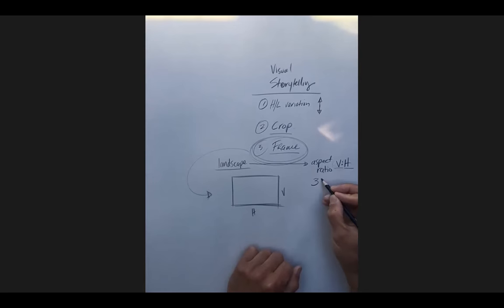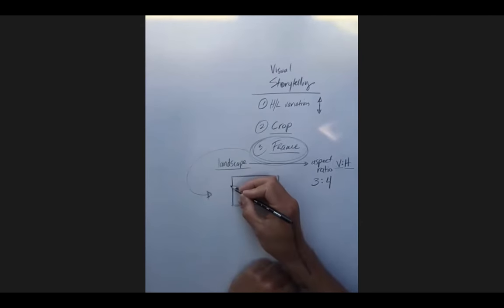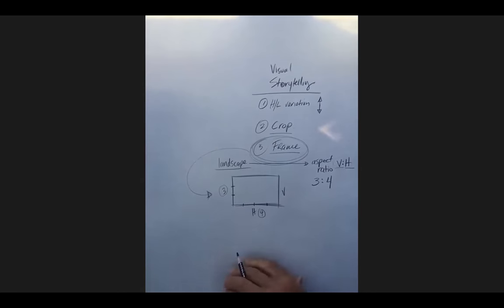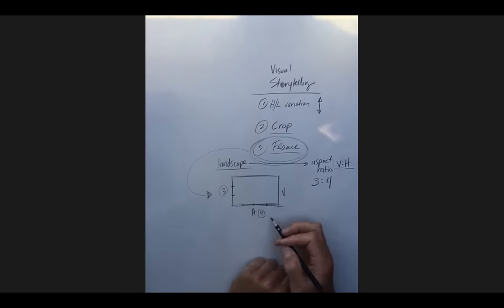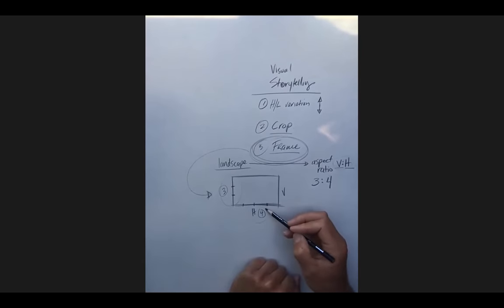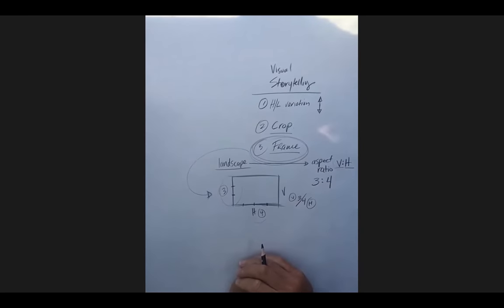Our aspect ratio for every drawing in this class from this point forward is going to be 3 to 4. So that means if you took this vertical axis and divided it up into three equal chunks, along the horizontal axis you would have four of those chunks. This doesn't mean these things have to be four inches and three inches — it means whatever unit of measurement you're using, if it's three centimeters here it's four centimeters here, if it's six centimeters here it's eight centimeters here. The fractions make sense: verticals are relating to horizontals in that way.